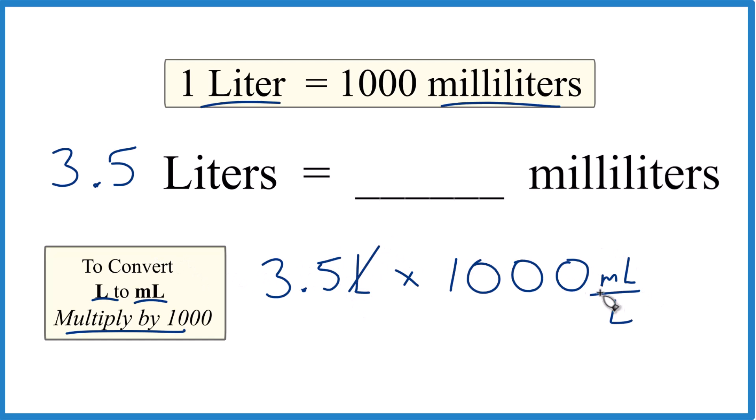Now, when we multiply it, liters on top and bottom, they cancel out. We're left with milliliters. That's what we're looking for.